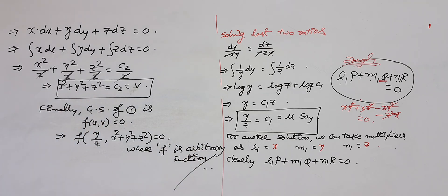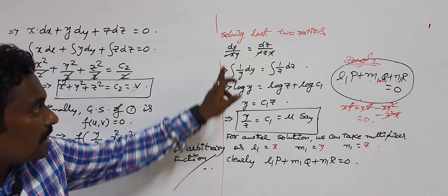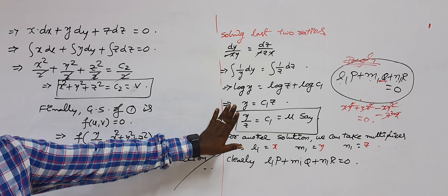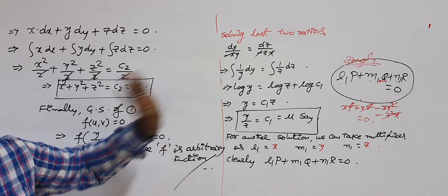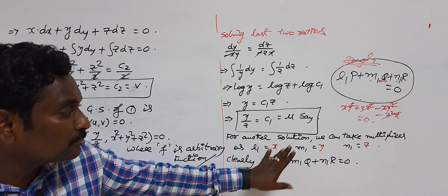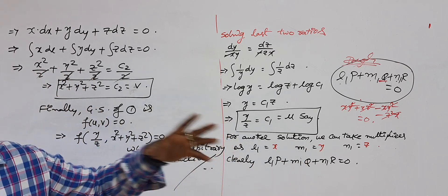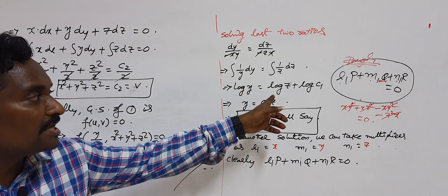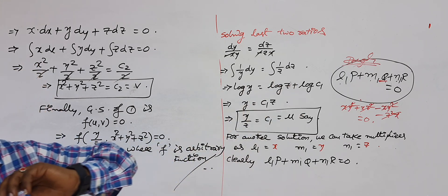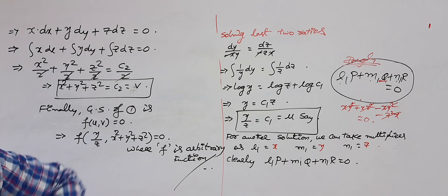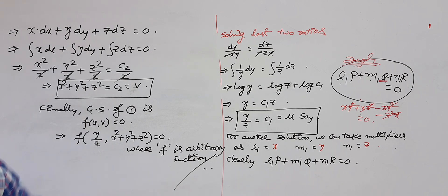Suppose the last two ratios cannot be solved directly — then you must choose two sets of multipliers: one set L₁, M₁, N₁ and another set L₂, M₂, N₂, each satisfying the combination equal to 0. I discussed how to find such multipliers in earlier problems — please look at those as well. Thank you very much.